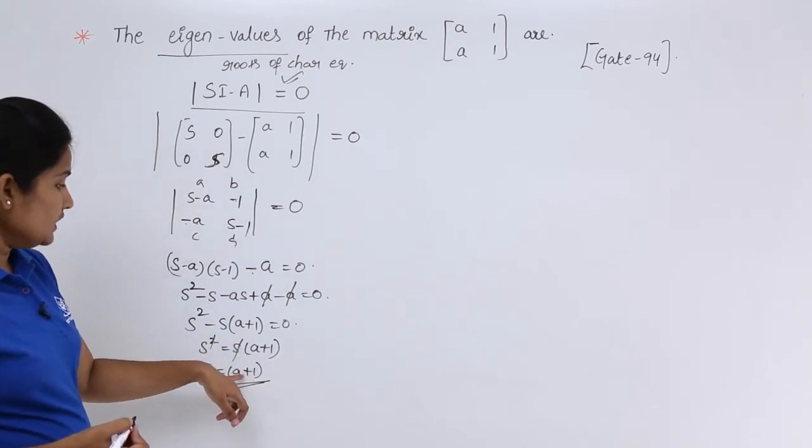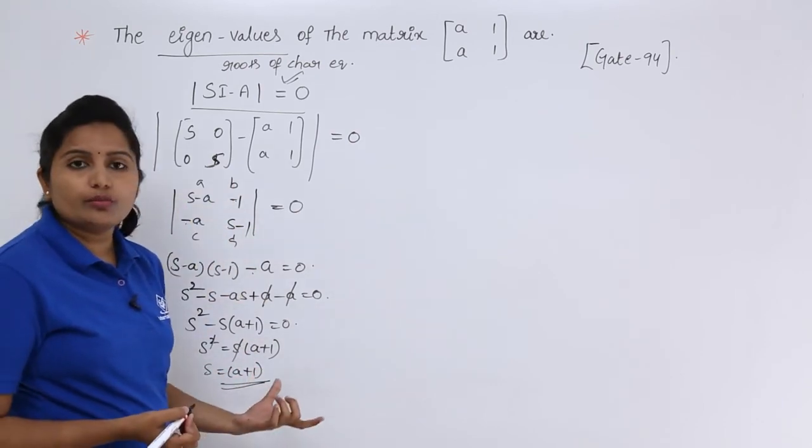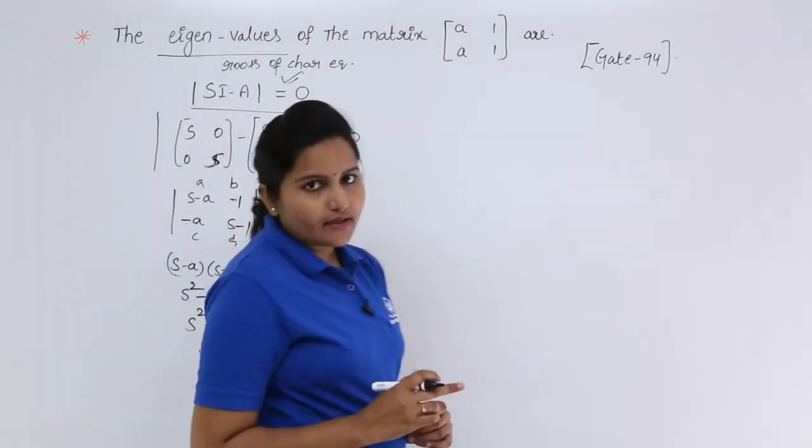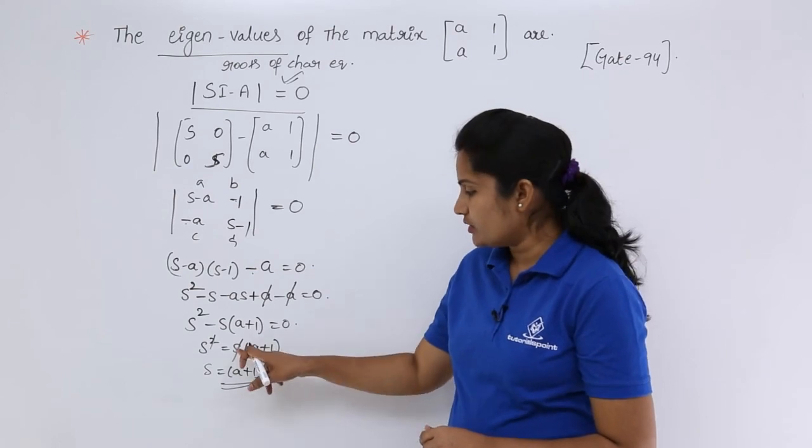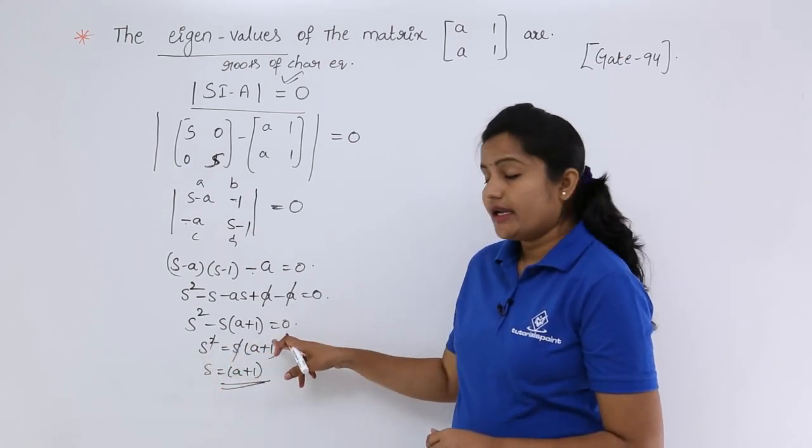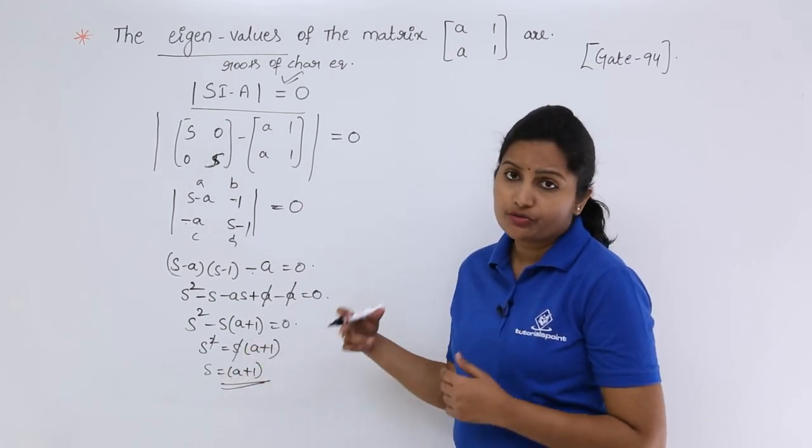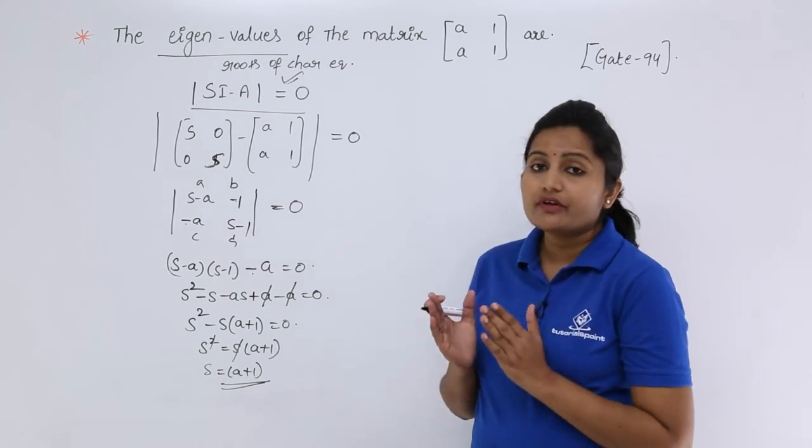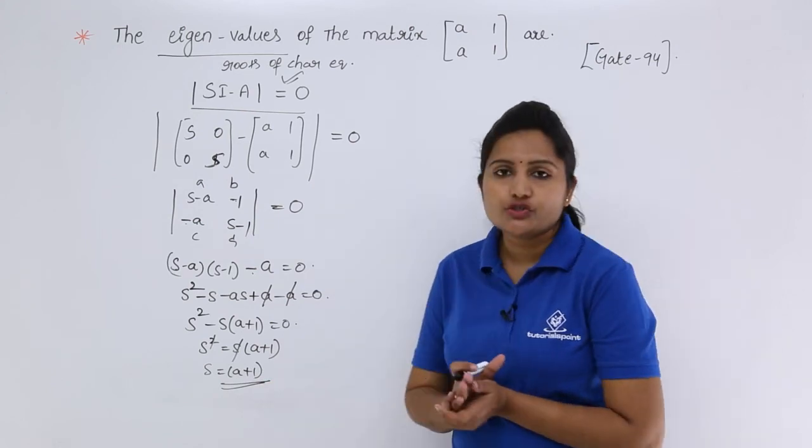The eigenvalues are A plus 1. So like this we can solve problems related to eigenvalues. We can get one more eigenvalue here, that is S is equal to 0. Here you can see S into A plus 1, S is equal to A plus 1. So this is one eigenvalue and S is equal to 0 will be another eigenvalue. So here our main eigenvalue, our main root will be A plus 1.